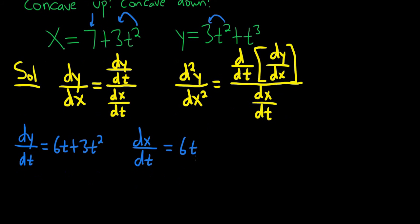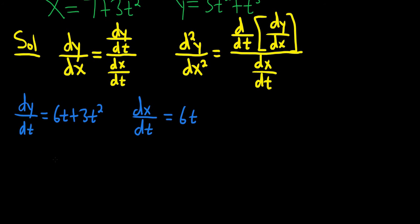Okay, let's go ahead and form dy/dx. We can write that down now. So dy/dx is dy/dt over dx/dt. So it'll be (6t + 3t²) / 6t. So it's just dy/dt over dx/dt.